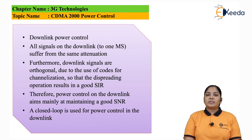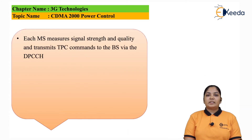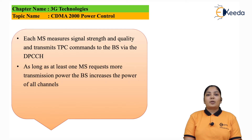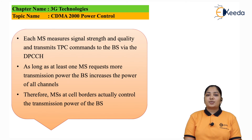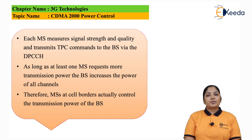A closed-loop power control system is used for downlink operation. Each mobile station measures the signal strength and quality and transmits the TPC command to the base station via DPCCH, the Dedicated Physical Control Channel. As long as at least one mobile station requests more power from the base station, the base station increases the power of all the channels. This means there has to be at least one mobile phone indicating that the power from the base station is not sufficient, and hence the base station increases the power for all channels. Therefore, the mobile stations near the cell border are actually controlling the transmission power of the base station, since base stations are held at the center of the cell and the mobile station with the weakest power is towards the edge or cell border.